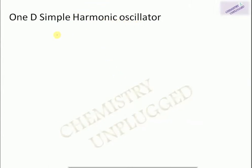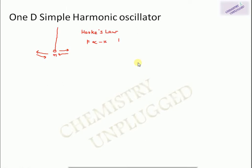Let's start with the 1D simple harmonic oscillator. A one-dimensional simple harmonic oscillator is an oscillator in which a single particle oscillates to and fro about its equilibrium position. We have a particle of mass m oscillating about its equilibrium position. This particle follows Hooke's law, according to which a restoring force acts on the particle, directly proportional to displacement, with a negative sign because force and displacement are always opposite in direction.